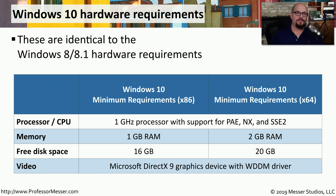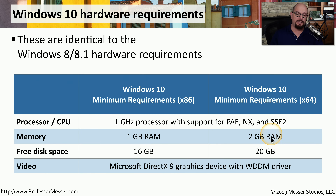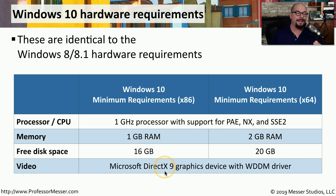Here's a summary of the hardware requirements for Windows 10 — identical to those for Windows 8 and 8.1. Both the 32-bit and 64-bit versions require a minimum 1 gigahertz processor with support for PAE, NX, and SSE2. The 32-bit version requires 1 gigabyte of RAM; the 64-bit version requires a minimum of 2 gigabytes. The 32-bit version needs at least 16 gigabytes of free disk space, and the 64-bit version needs 20 gigabytes. Both versions require a video adapter that supports the Windows Display Driver Model running Microsoft DirectX 9.